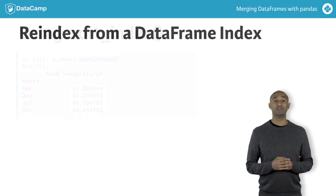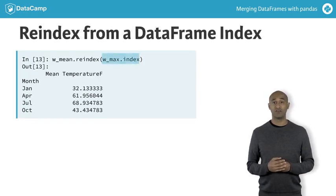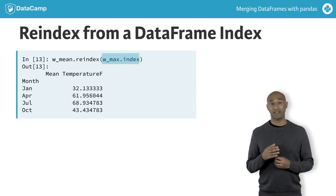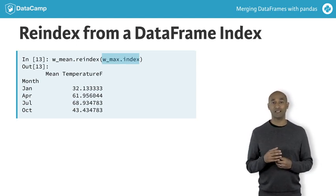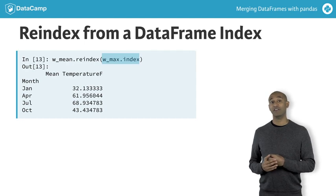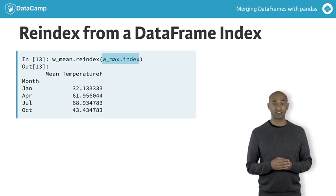The input argument to the reindex method can also be another data frame's index. For instance, here we use the index from W_max to reindex W_mean in chronological order. When a suitably indexed data frame is available, the reindex method spares us from having to create a list manually or having to sort the index.